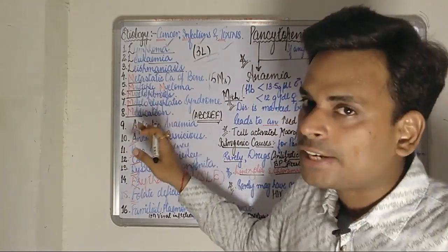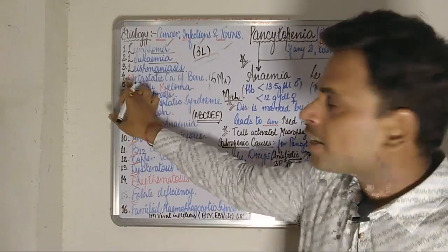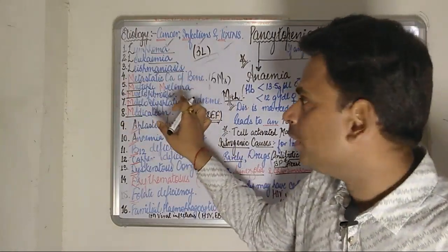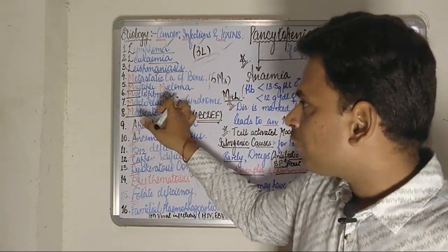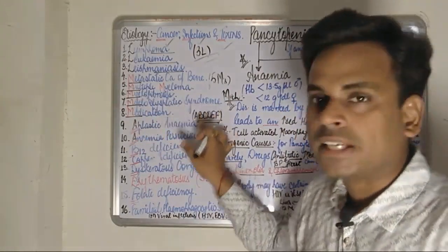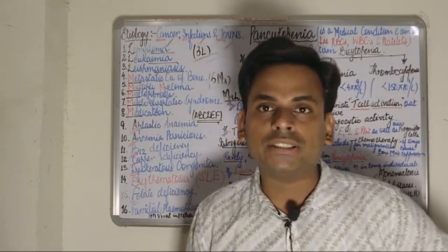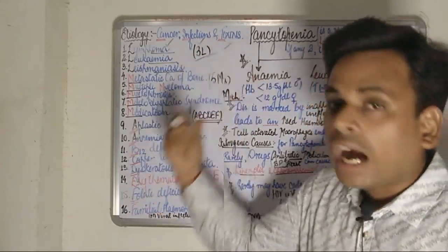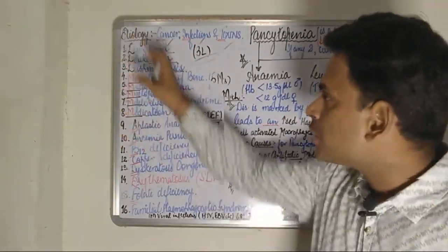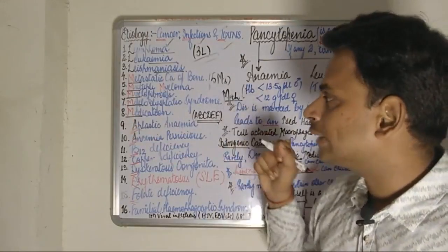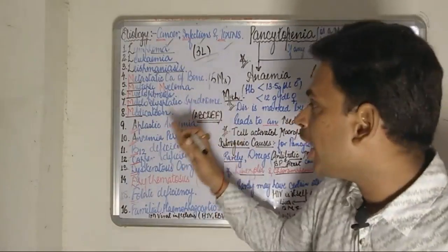Moving on to the Five M's as etiological factors for pancytopenia: the first M refers to metastatic carcinoma of the bone; the second M is multiple myeloma; the third M is myelofibrosis; the fourth M is myelodysplastic syndrome; and the fifth M refers to the use of certain medications, which are also responsible for causing pancytopenia.